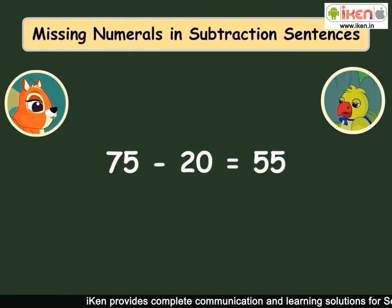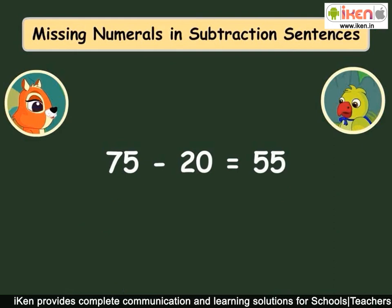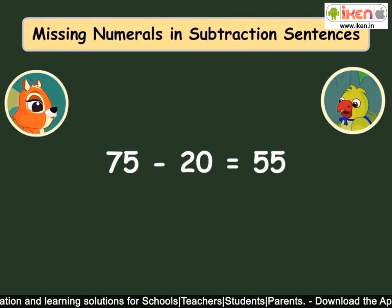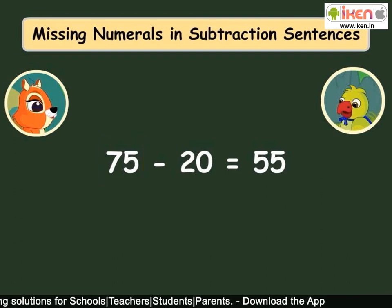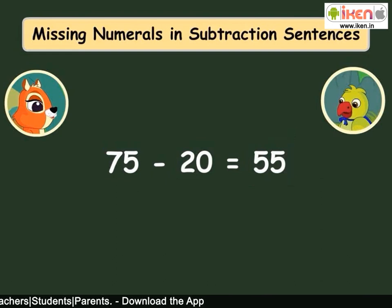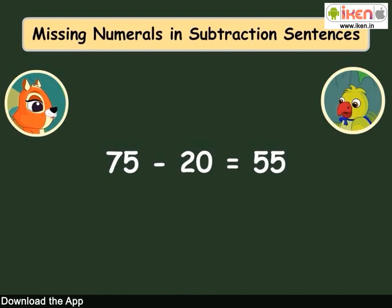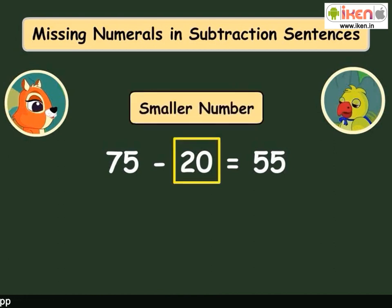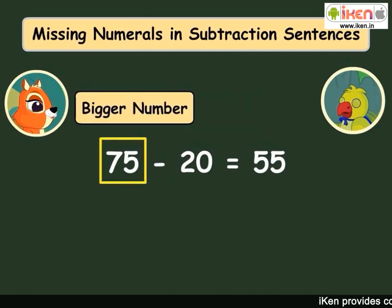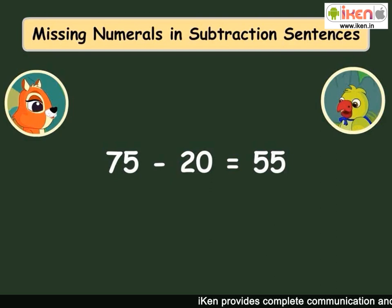Will this method help us in finding missing numbers in subtraction statements? Yes — first, take a look at a subtraction sentence: 75 minus 20 is equal to 55. In subtraction, the smaller number is subtracted from the bigger number. Here, 20 is the smaller number subtracted from 75, the bigger number. We use different methods to find the bigger and smaller missing numbers in a subtraction sentence.